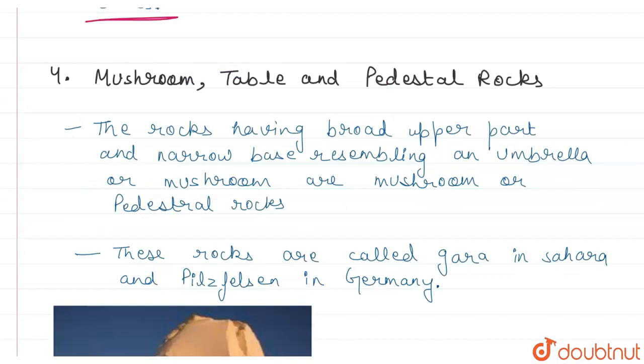The next erosional landform is mushroom, table, and pedestal rocks, which have a broad upper part and a narrow base. This is why it resembles an umbrella or mushroom. We call it mushroom rocks or pedestal rocks. They are called Gaara in Sahara Desert and Pinsfelsen in Germany.